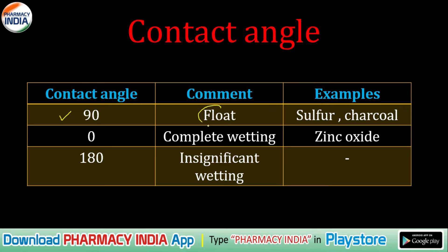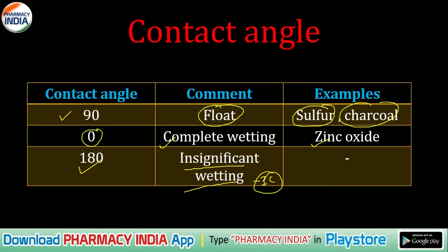Examples: substances like sulfur and charcoal show a 90-degree contact angle — meaning the liquid floats at 90 degrees. Zinc oxide shows complete wetting, meaning a contact angle of zero degrees. A contact angle of 180 degrees indicates insignificant or incomplete wetting.